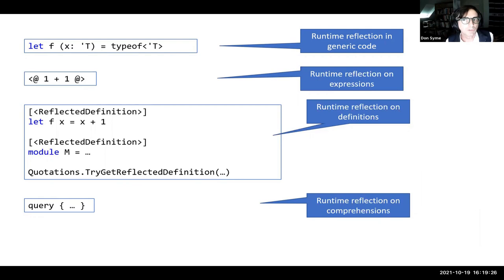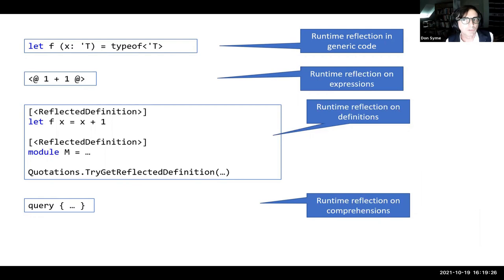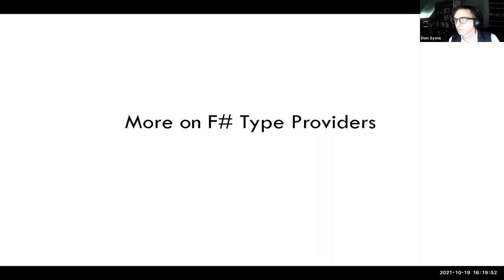One particular mechanism I want to talk about is F-Sharp type providers, which break the rules in a very different way and are still an almost unique thing. C-Sharp is getting very close to F-Sharp type providers through a thing called source generators, which are a powerful addition to the C-Sharp compilation chain and tooling, with a slightly different emphasis than type providers.